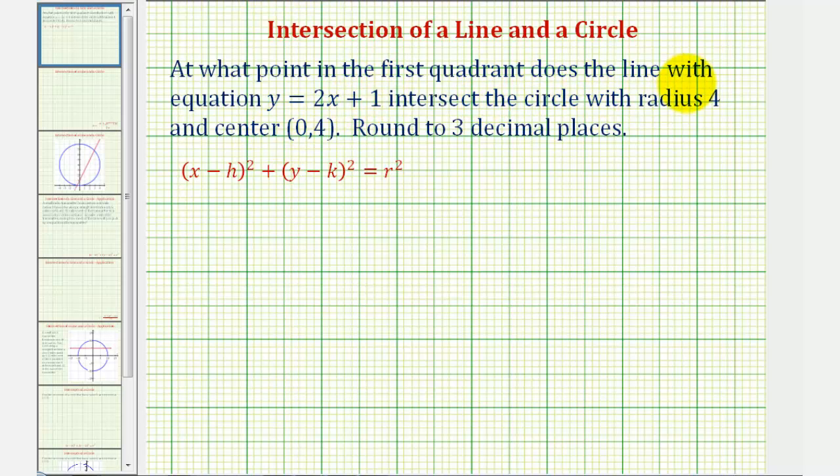At what point in the first quadrant does the line with the equation y equals 2x plus 1 intersect the circle with radius 4 and center (0,4)? We're asked to round to three decimal places.